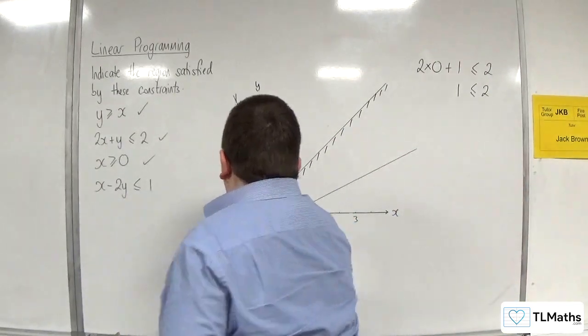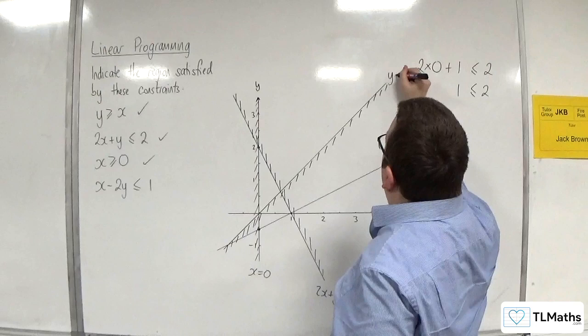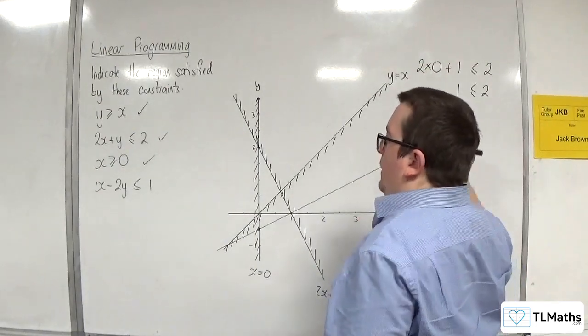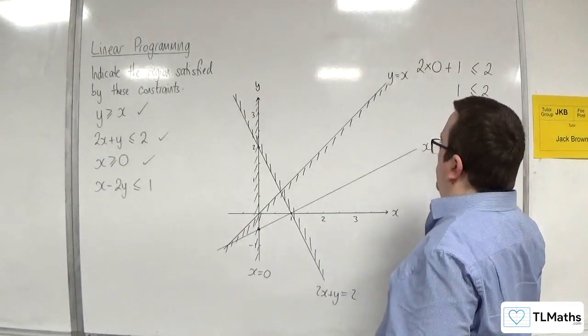So that's going to get a little bit confusing if I label the y equals x there. So I'll label it here. Y equals x. And this one is x take away 2y equals 1.